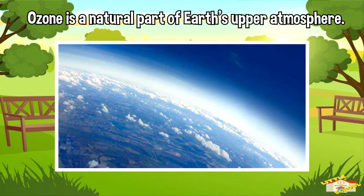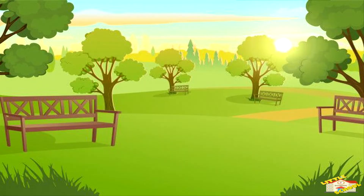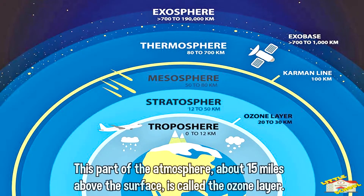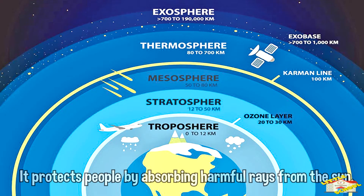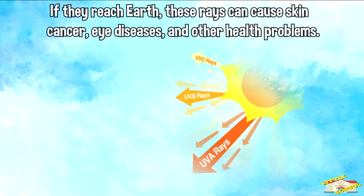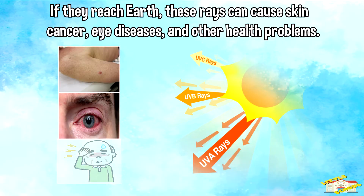Ozone is a natural part of Earth's upper atmosphere. This part of the atmosphere, about 15 miles above the surface, is called the ozone layer. It protects people by absorbing harmful rays from the Sun. If they reach Earth, these rays can cause skin cancer, eye disease, and other health problems.